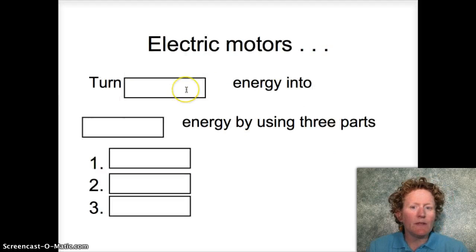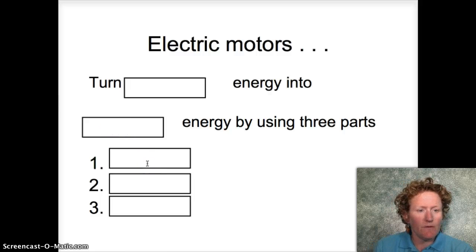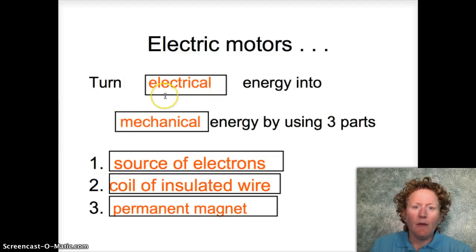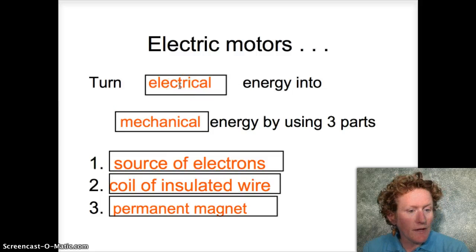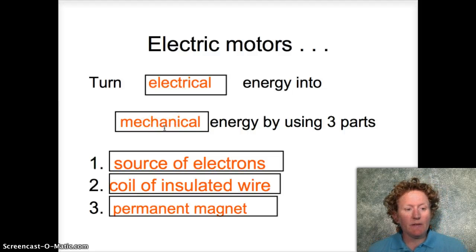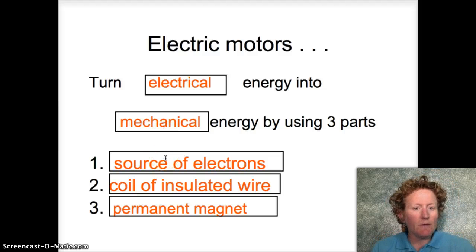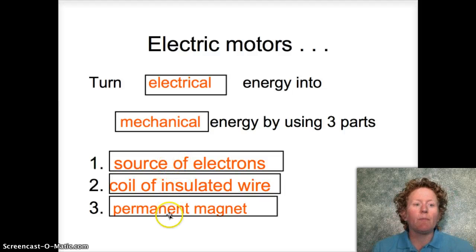So electric motors turn electrical energy into mechanical energy. To make an electric motor, you need a source of electrons, a coil of insulated wire, and a permanent magnet.